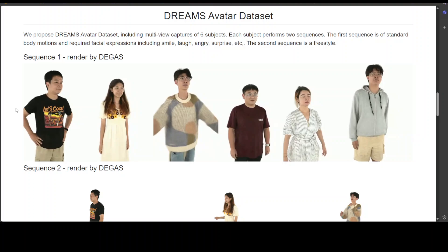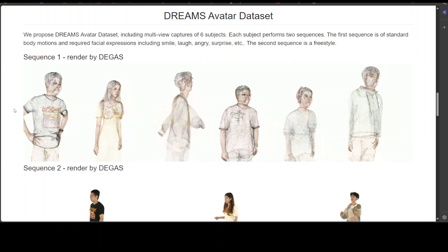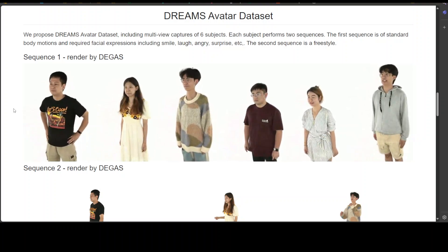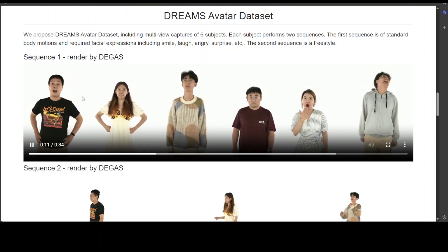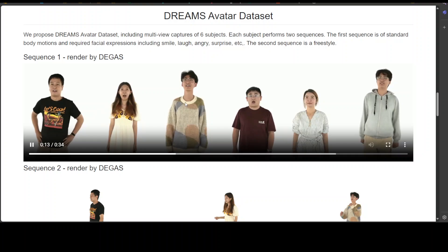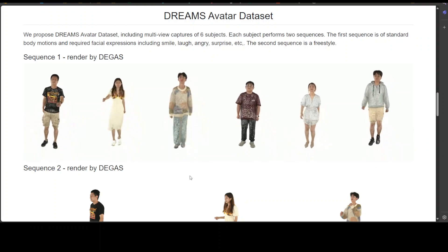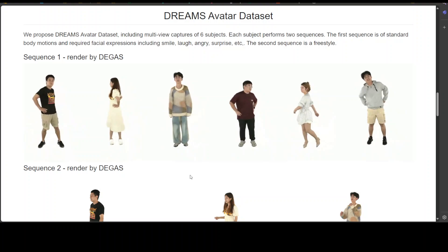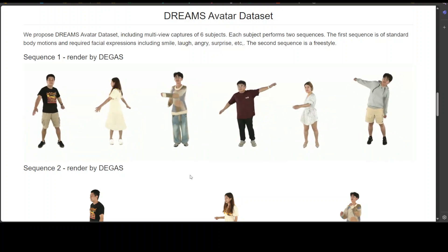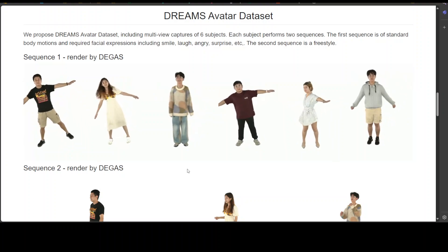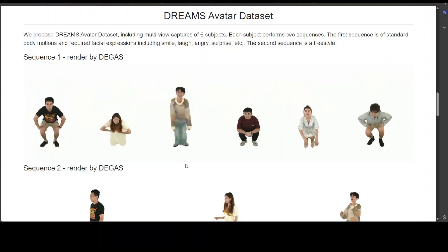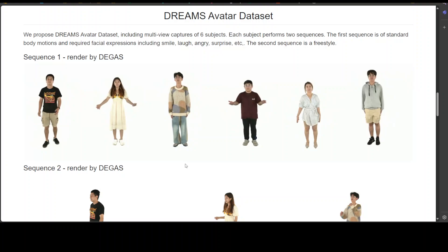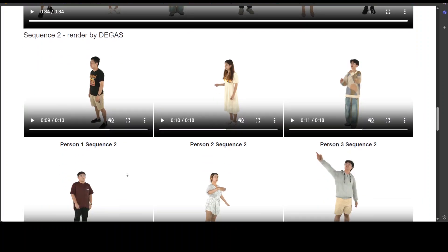This is the Dream Avatar dataset which I was referring to, and we also saw an example of it above. Look at this — it includes all the facial expressions: surprise, smile, jogging, walking, laughing, angry, surprise. Simply amazing, all AI-based. Dream Avatar is specifically designed for evaluating full-body talking avatars with rich facial expressions.